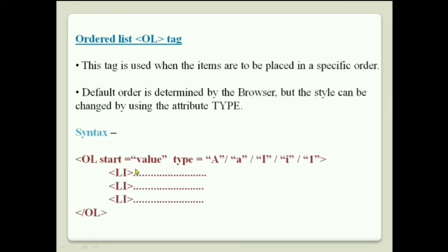By default, when you use the OL tag without attributes, list items are shown as 1, 2, 3, 4. If you want capital alphabets, type capital A within double quotes. For small a, b, c, d, type small a within double quotes. For upper Roman numerals, type uppercase I within double quotes. For lower Roman numerals, use lowercase i within double quotes.